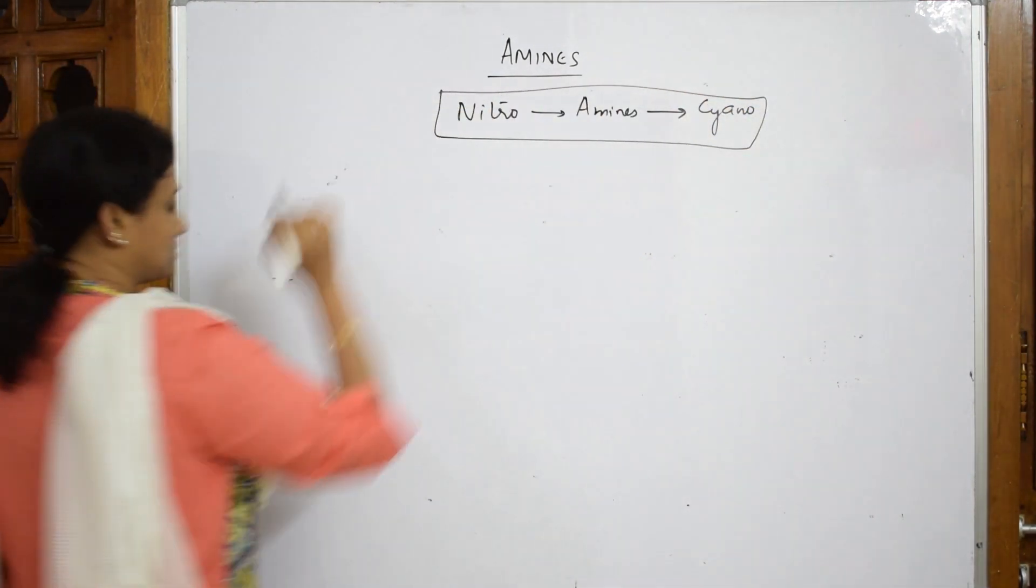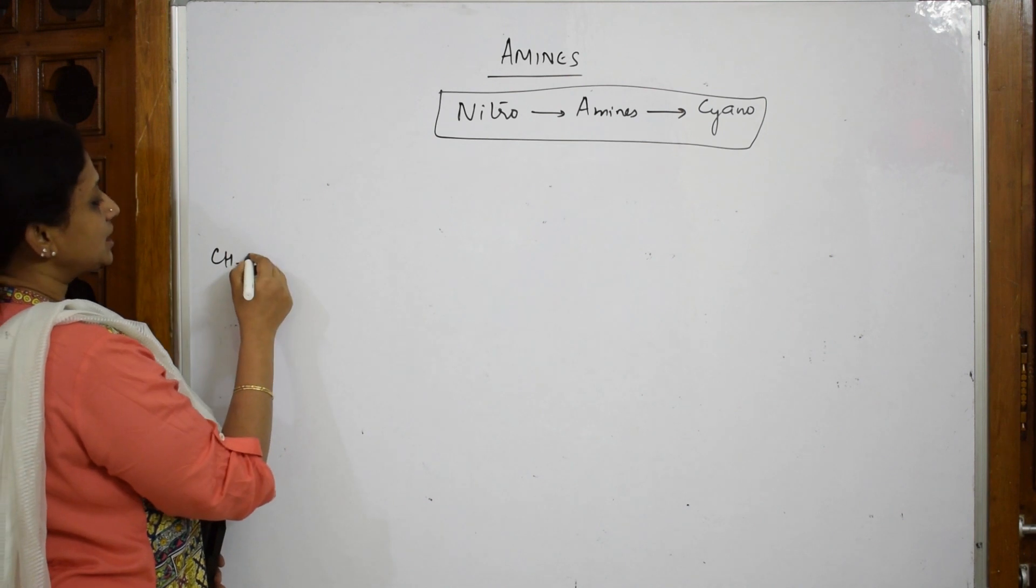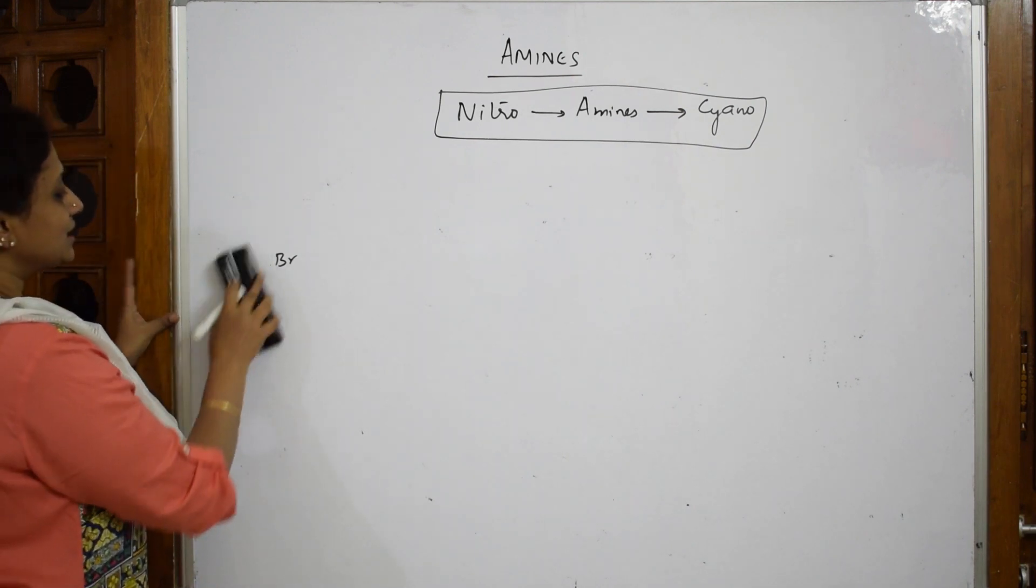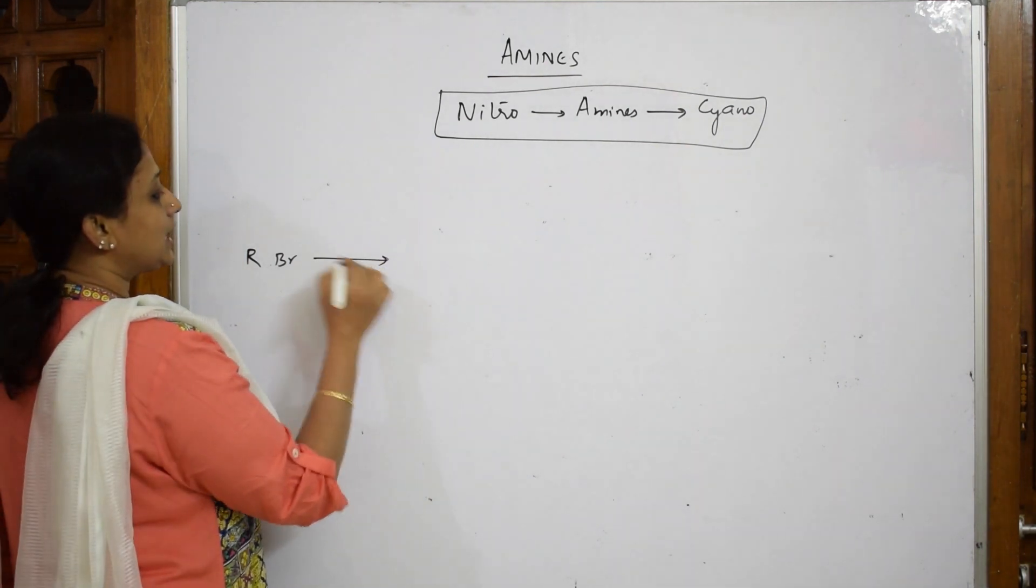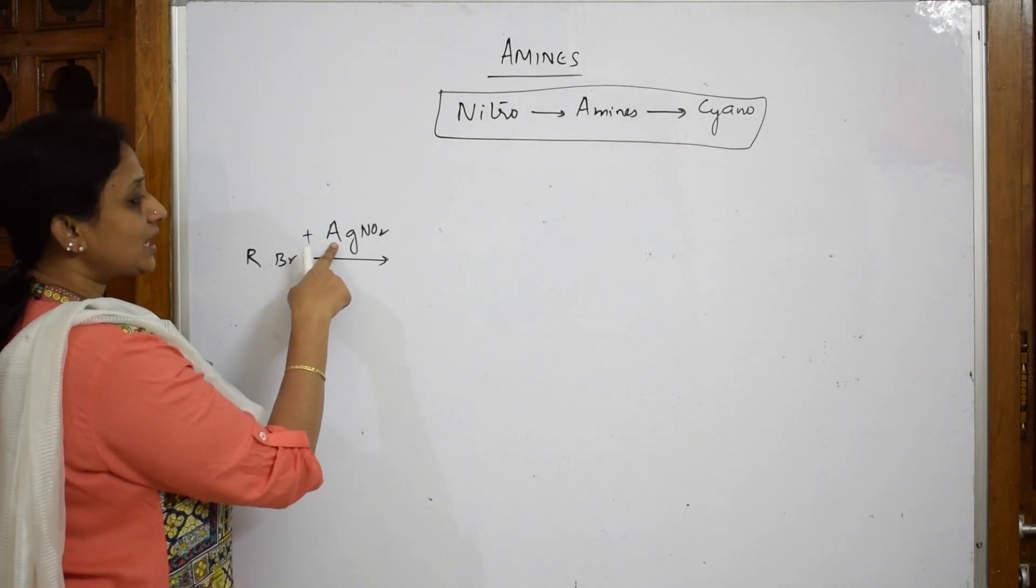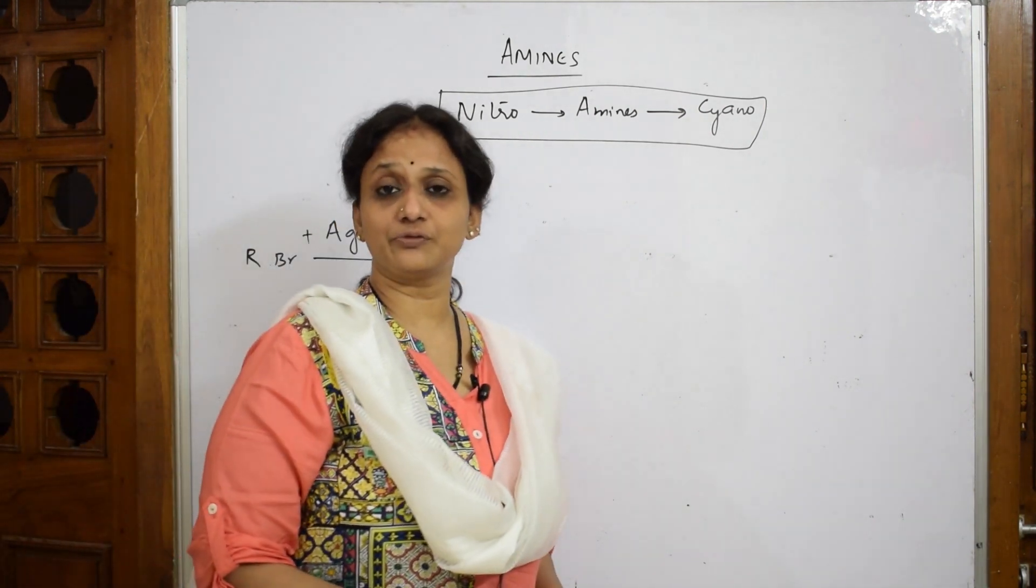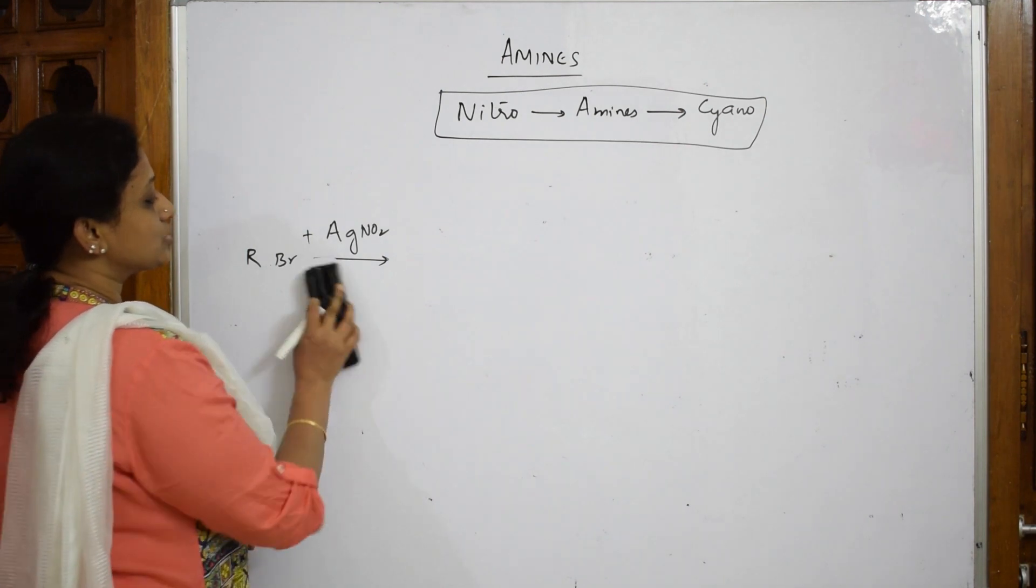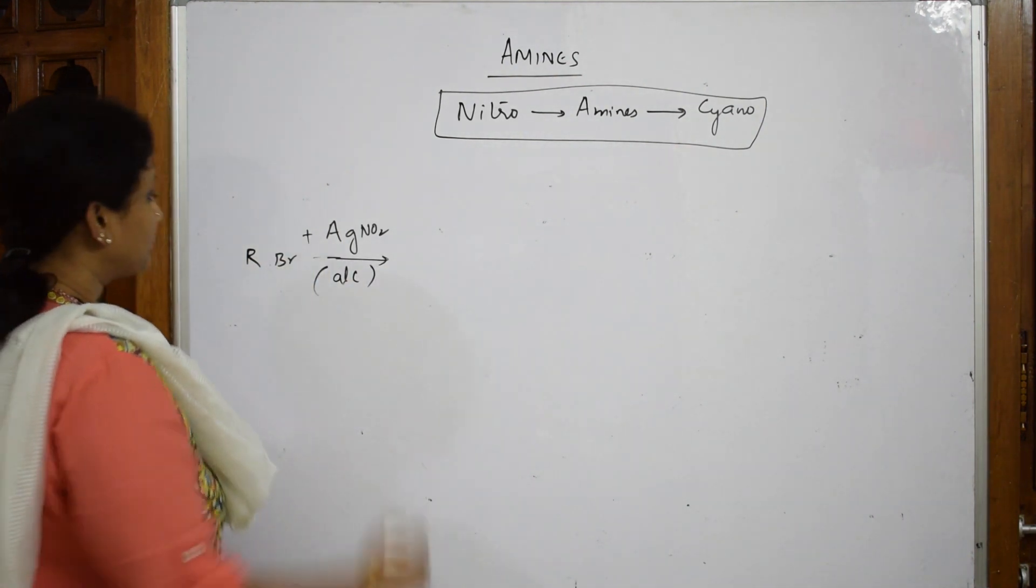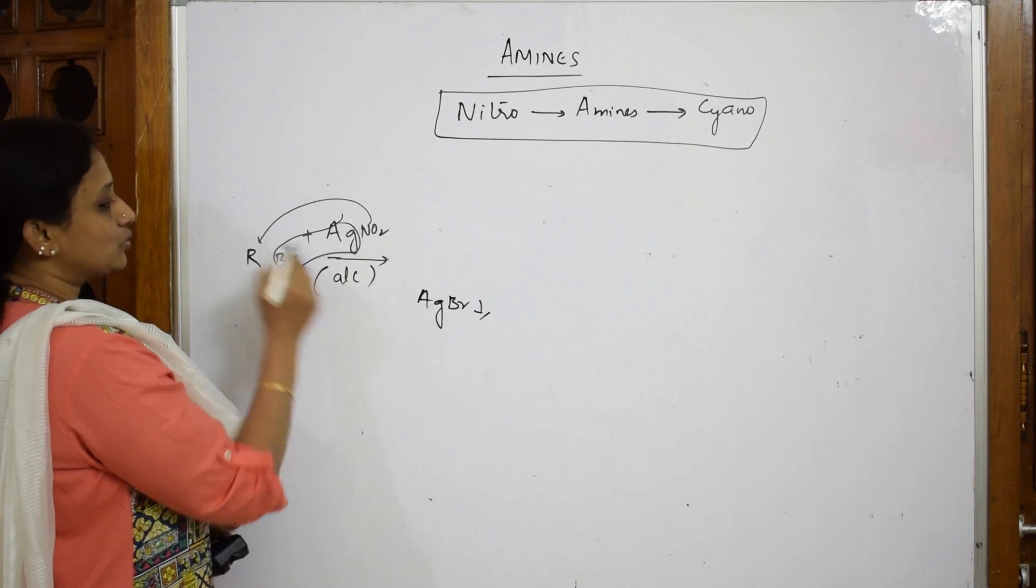First let us prepare nitro compound. Suppose if I have CH3CH2Br, this is your alkyl halide, so I'm writing it as RBr. To this RBr, I am going to introduce silver nitrite (AgNO2). Important: why are we adding silver nitrite? Because silver nitrite is going to come out as a precipitate AgBr, which we studied in grade 10 used in photographic technique. The solvent should be alcoholic. AgBr comes out as a precipitate, what is left is NO2. I have prepared nitro compound.